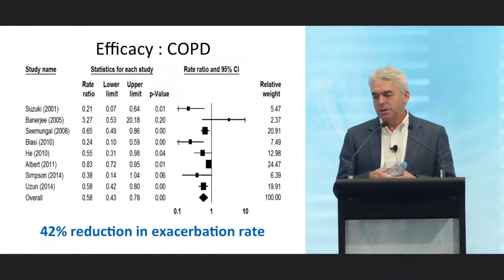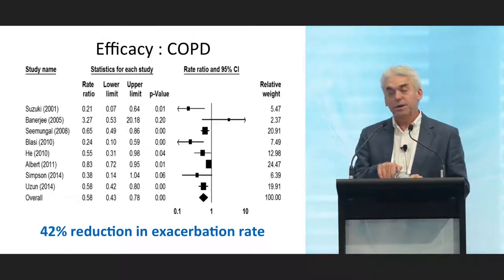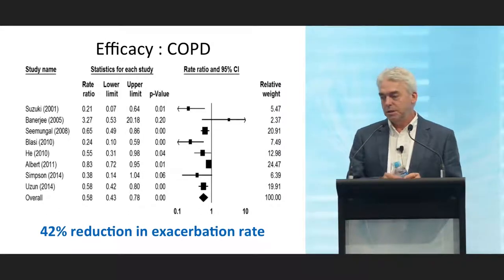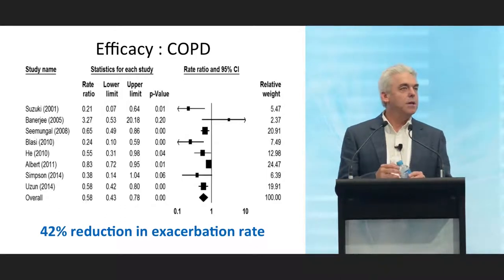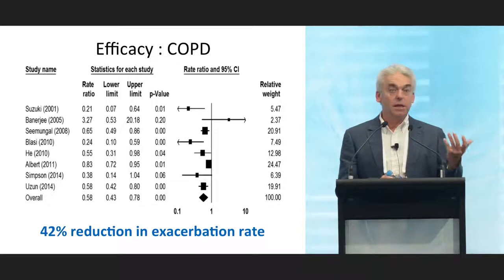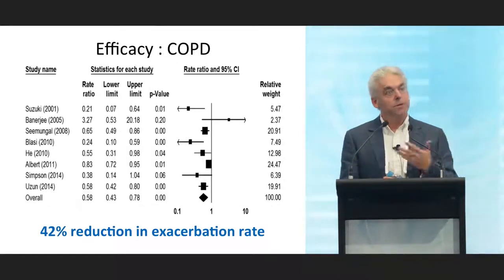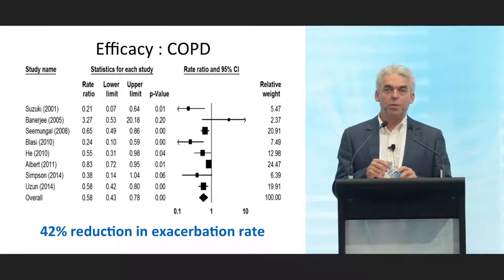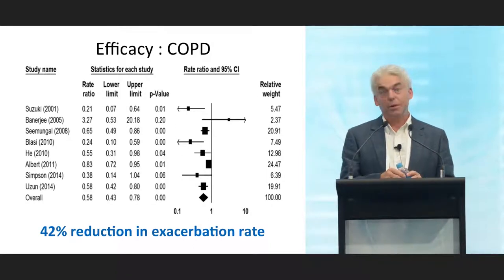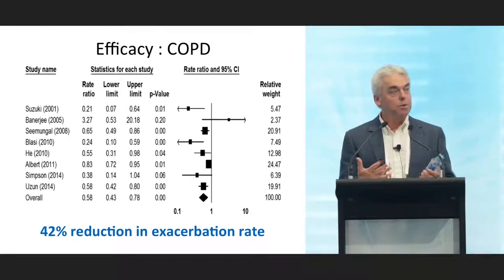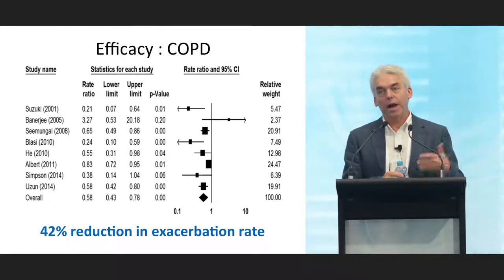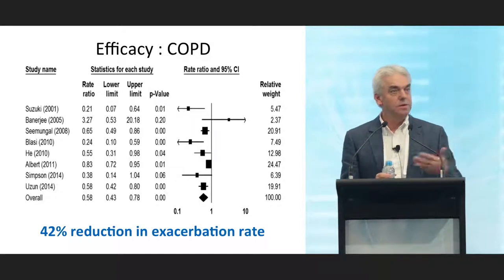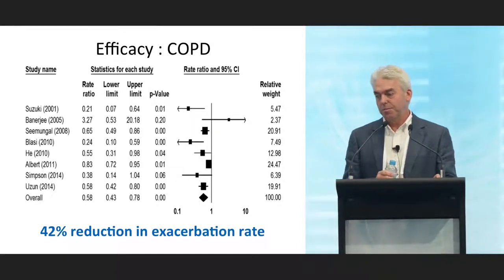This forest plot shows the efficacy of macrolides in COPD. On average there's a 42% reduction in exacerbation rate — a clinically important effect, double what we're hearing about with bronchodilators and triple therapy. In some cases this is in addition to inhaled therapy; in others, not all patients received optimal inhaled therapy.